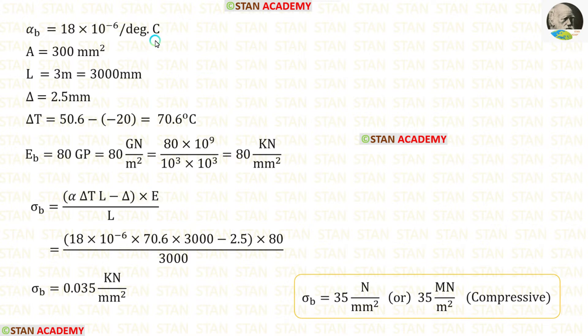First let us make the given data. Alpha b is given in the question. Area is equal to 300 millimeter square. Length is given in meter. We can convert that into millimeter. Delta is equal to 2.5 millimeter. Delta T is equal to 50.6 minus minus 20. We will get 70.6 degrees Celsius. The Young's modulus is given in gigapascal. We can convert that into kilonewton per millimeter square.